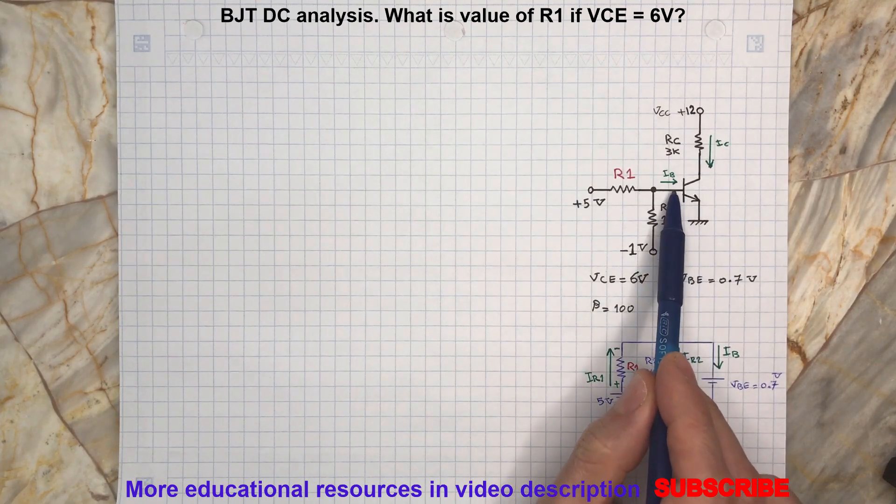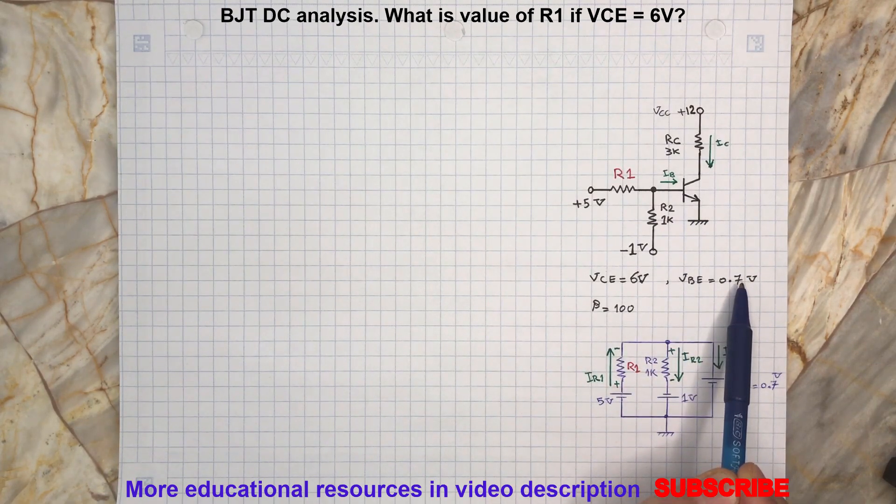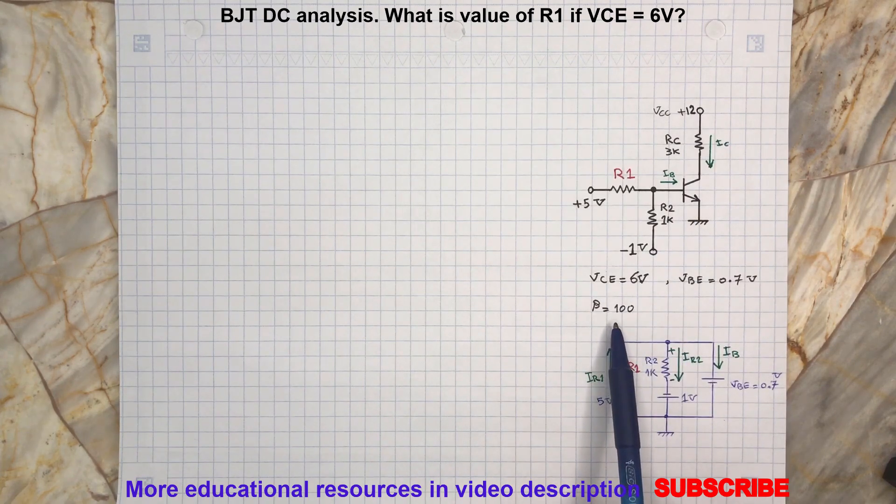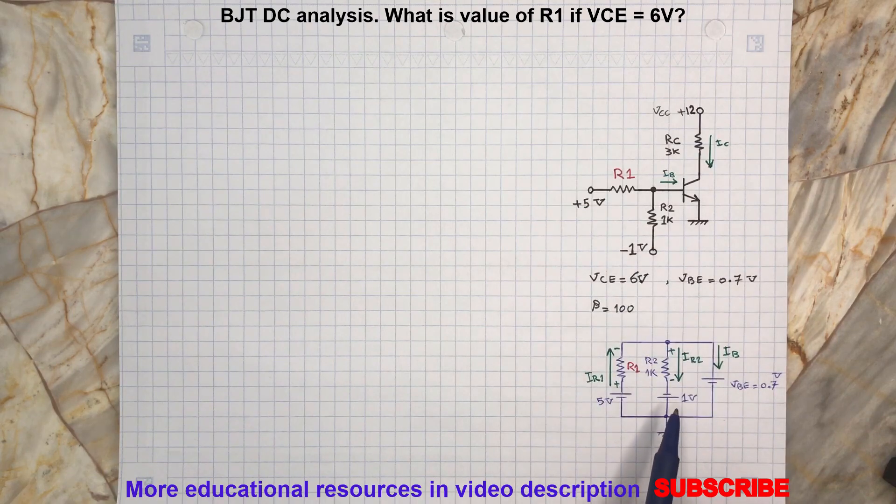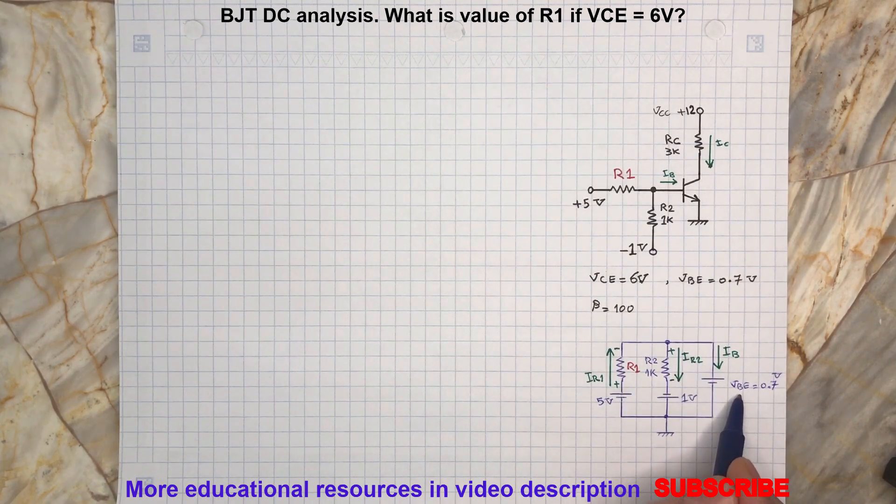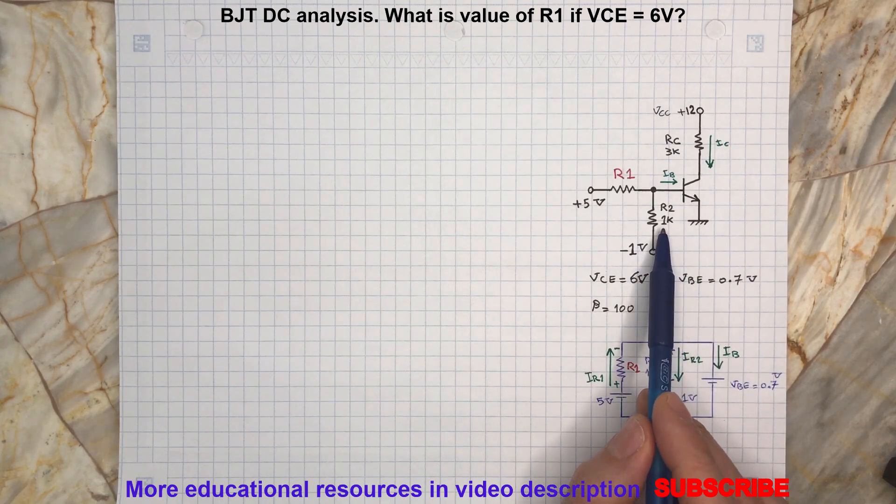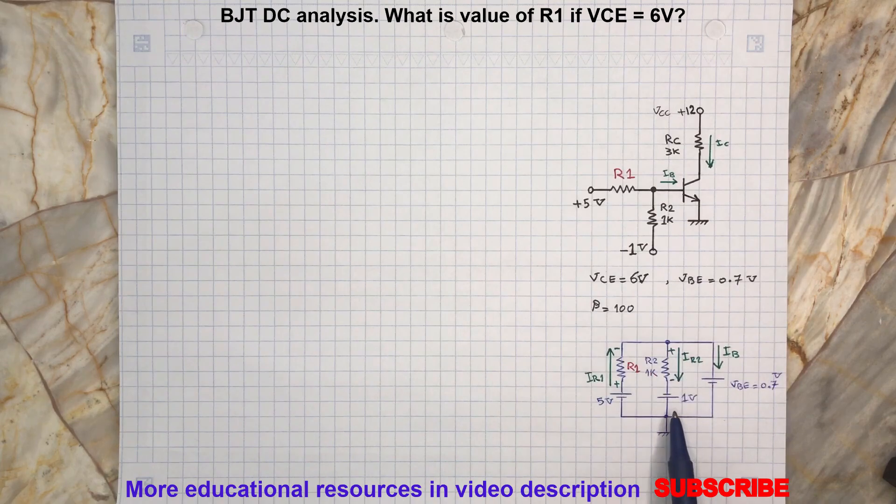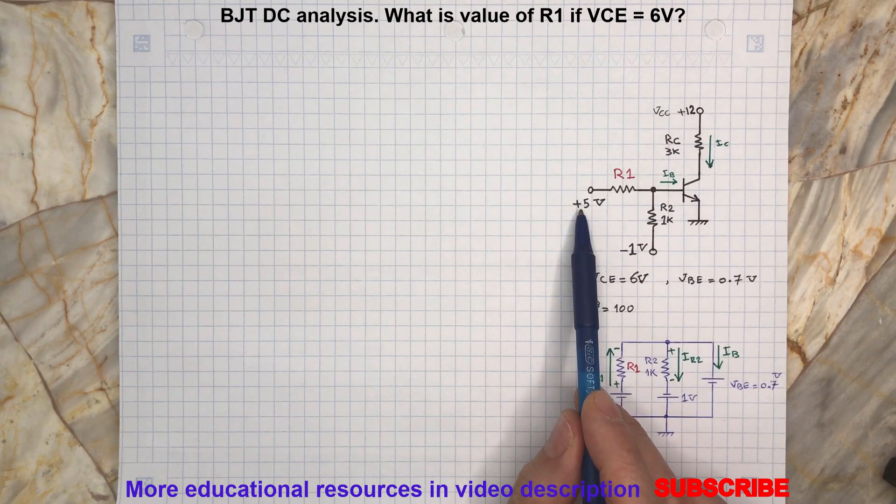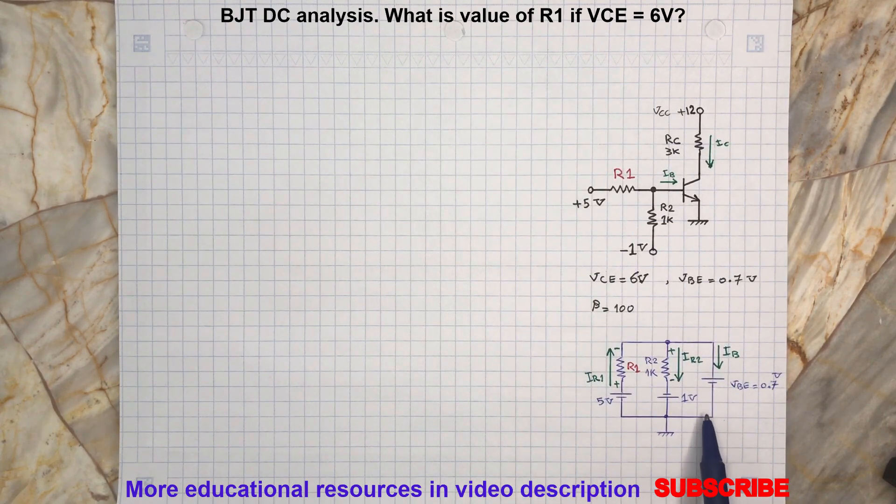VBE base to emitter is 0.7 volt and beta for this transistor is 100. Here in the bottom you see the simplified version of this circuit. So we have VBE voltage base emitter here and we have this R2 and negative 1 volt here and positive 5 volt here and here you see the common grounded point.